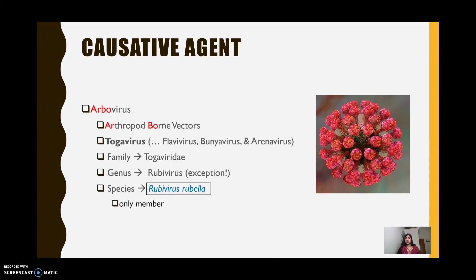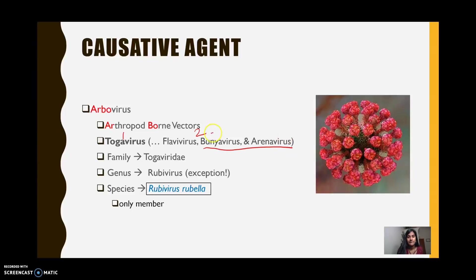In order to dig deeper into this causative agent, we should first understand that it falls under the broad generic category of arboviruses. Arboviruses are viruses or vectors that are arthropod-borne — that's where the "arbo" part comes in. They are broken down into three categories: category one consists of the togaviruses, category two of the flaviviruses, and category three of the bunyaviruses and arenaviruses. Our causative agent falls in the family Togaviridae.